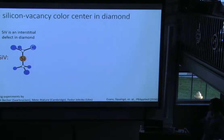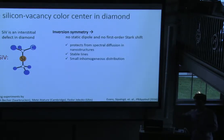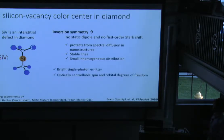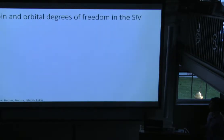The solution is that we have to take a different emitter. In this talk, I will tell you about silicon vacancies in diamond. SiV is an interstitial defect in diamond - a silicon atom sits in between two vacancies in the diamond lattice. It's very important that this system has high symmetry. It features inversion symmetry. This symmetry prohibits SiV from having a static electrical dipole moment. In this case, the system couples only quadratically to electrical noise. This protects us from spectral diffusion in nanostructures, gives us stable lines, and explains the small inhomogeneous broadening of atomic transitions.